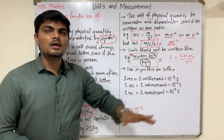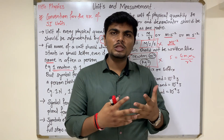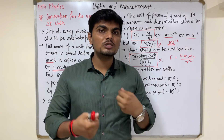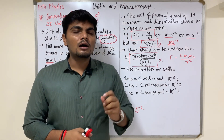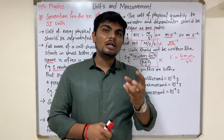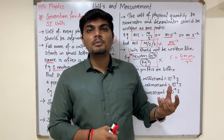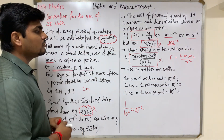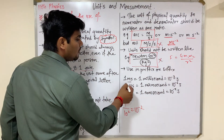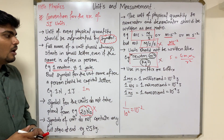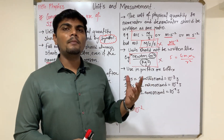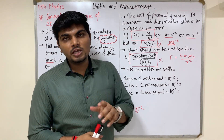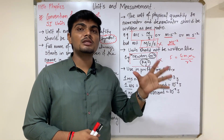The next convention involves using prefixes. Sometimes a physical quantity is very large or very small — for example, the size of an atom is extremely small when expressed in meters. In such cases, we use a prefix before the unit. There are many types of prefixes and suffixes, which I have listed in the description. You can refer to them there.